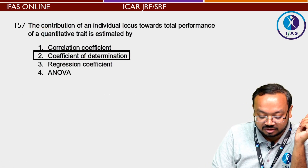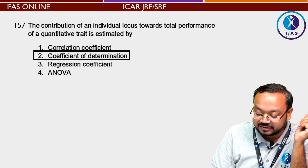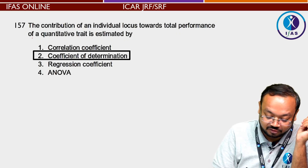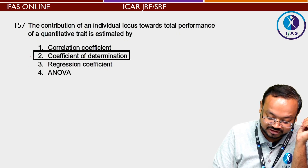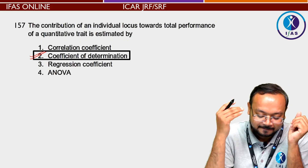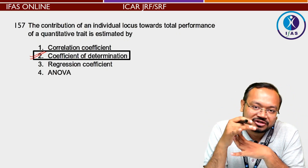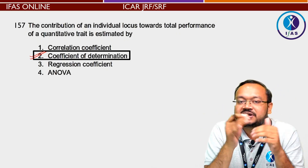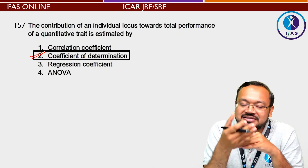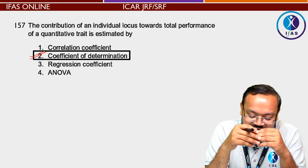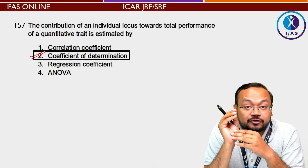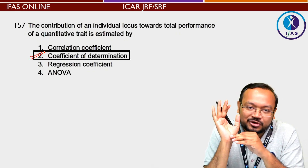Next question: The contribution of an individual locus towards the total performance of a quantitative trait is estimated by coefficient of determination। यहाँ पर अगर आपको अलग-अलग statistical methods और उनके उपयोग पता हैं तो यह आसानी से समझ में आ जाएगा। अगर concept पता नहीं है तो question छोड़ दें।